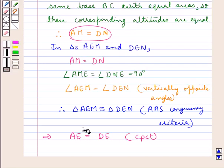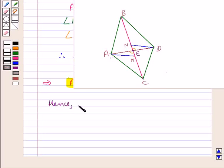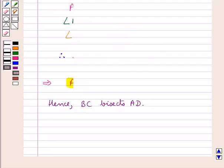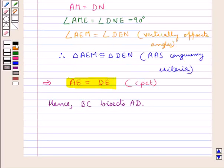And this is what we were supposed to prove. Hence we have that BC bisects AD. This completes the session, hope you have understood the solution of this question.